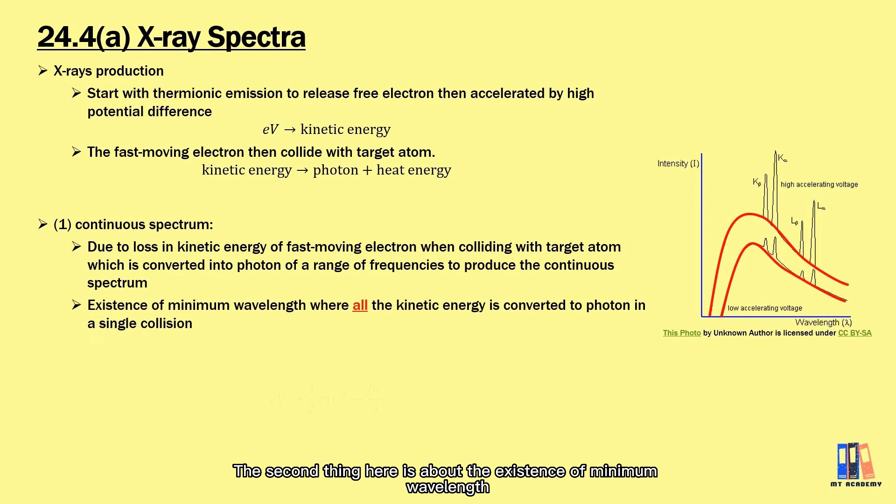The second thing here is about the existence of minimum wavelength. We can see there is a minimum value of wavelength obtained during the process, and this reflects one type of collision where all the kinetic energy of the electron is converted to photons in a single collision. The electron may collide a few times before it runs out of kinetic energy. So the minimum wavelength is when all the kinetic energy is converted at once. However, you could see that the intensity is low, which means that this type of collision has very low probability to occur.